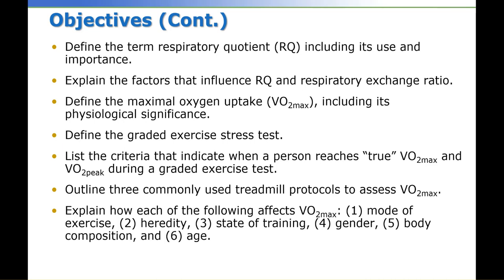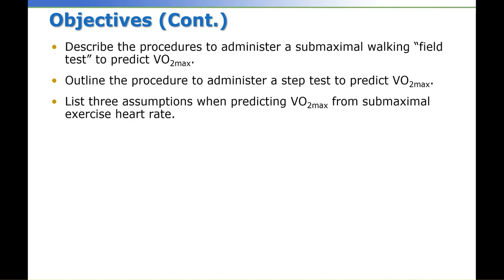Outline three commonly used treadmill protocols to assess VO2 max. Explain how each of the following affects VO2 max: mode of exercise, heredity, state of training, gender, body composition, and age. Describe the procedures to administer a submaximal walking field test to predict VO2 max. Outline the procedure to administer a step test to predict VO2 max. List three assumptions when predicting VO2 max and some maximal exercise heart rate.